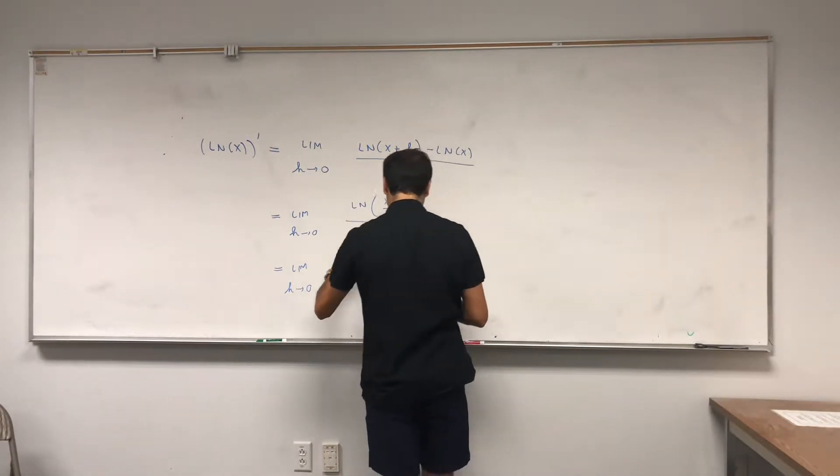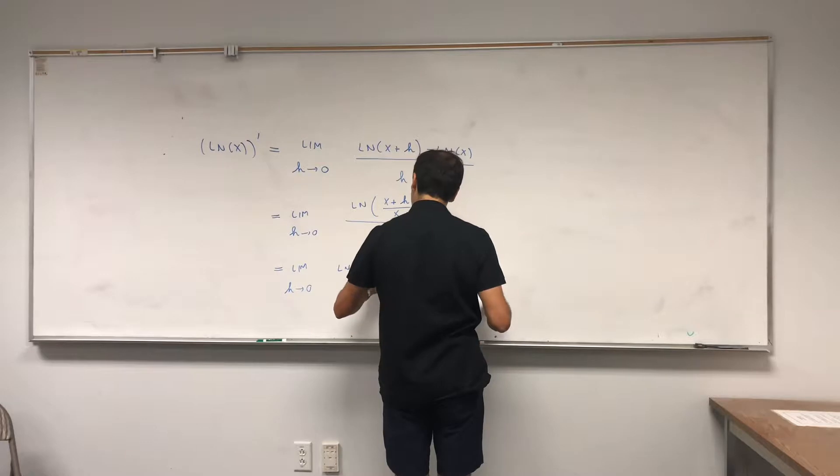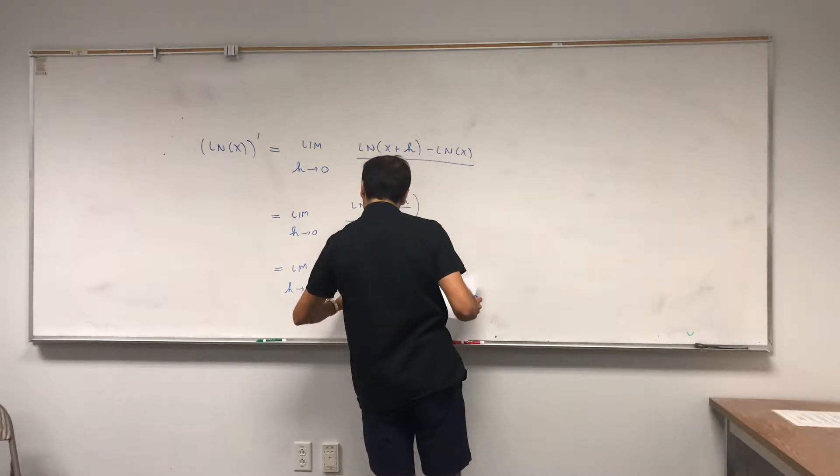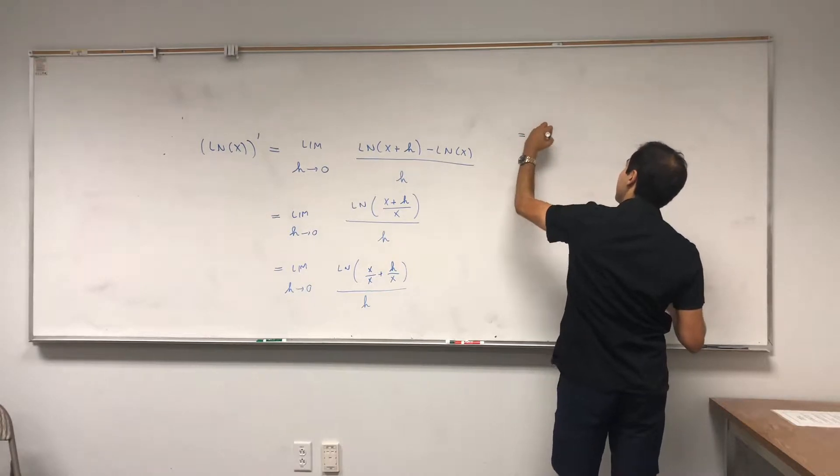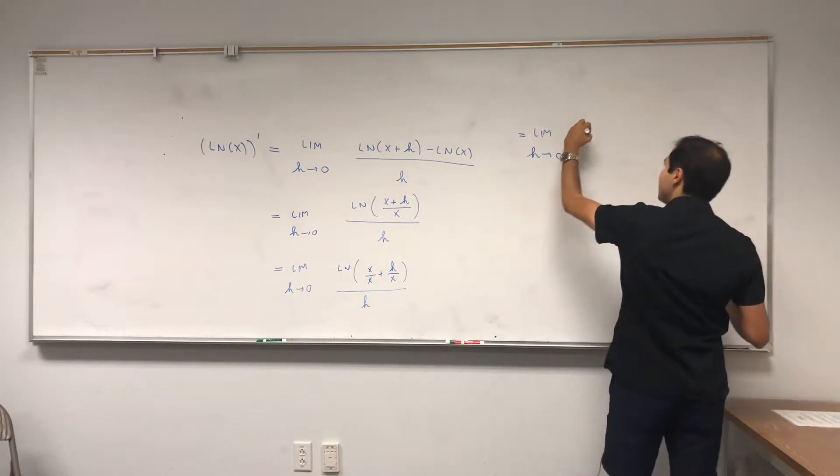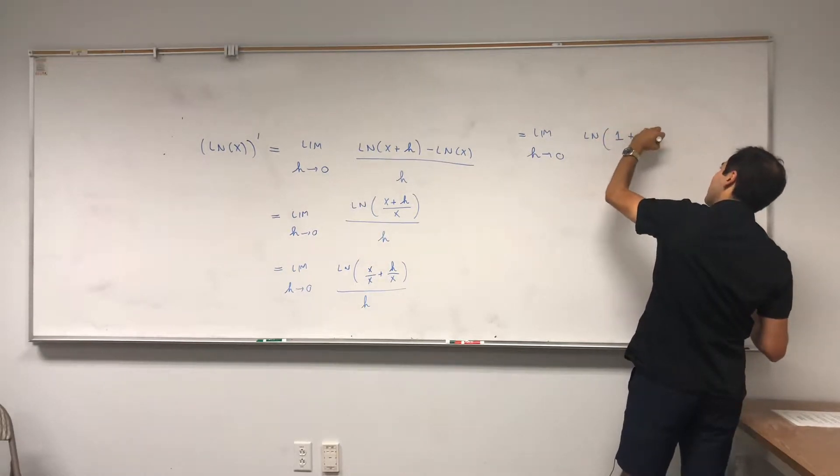So this becomes ln of 1 plus h over x. And let's limit h goes to 0 of ln of 1 plus h over x over h, and that becomes limit h goes to 0 of ln of 1 plus h over x.